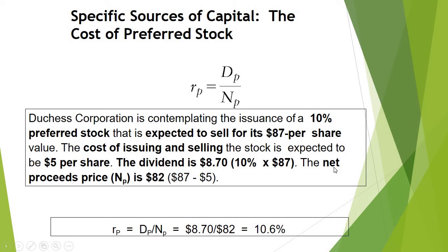Finally, the net proceeds will be $82. The selling price is $87, and the flotation cost — that means the cost of issuing and selling — is $5. So the net proceeds equals selling price of $87 minus the flotation cost of $5, which gives $82.